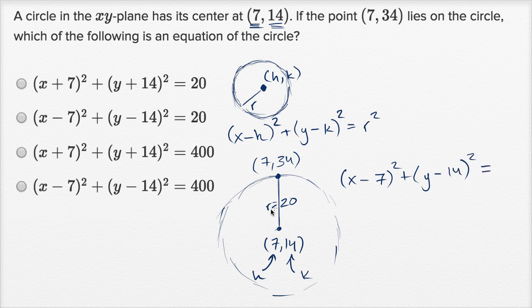is equal to r squared. 20 squared is 400. And so let's see, that is this choice right over here. x minus 7 squared plus y minus 14 squared is equal to 400.